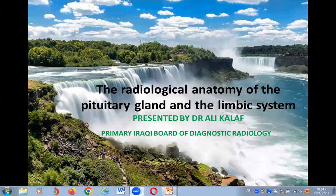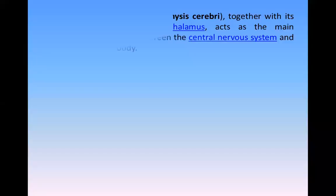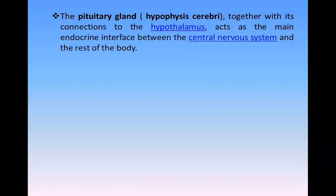The pituitary gland, also called hypophysis cerebri, together with its connection to the hypothalamus, acts as the main endocrine interface between the central nervous system and the rest of the body.